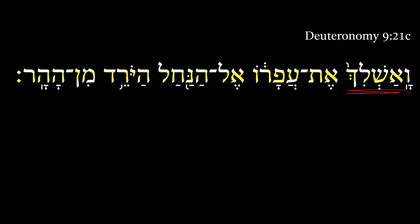Here we have a Hifil — it's an imperfect 1cs. Notice the aleph of the root shalach. The Hifil is indicated by the patach, and then the hiriq. I came way up here with that loop because we would normally expect to see the hiriq-yod, but this one is written defectively. So it's definitely a Hifil, but be aware that the yod is going to be missing.